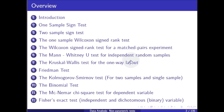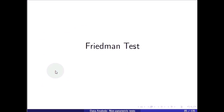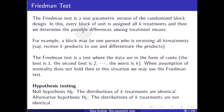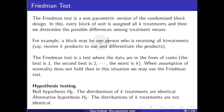In this video we'll talk about the Friedman test. The Friedman test is a non-parametric version of a randomized block design. In this, every block of units is assigned all k treatments and then we determine the possible differences among treatment means. For example, a block may be one person who is receiving all treatments — say, receiving k products to use and differentiate the products.